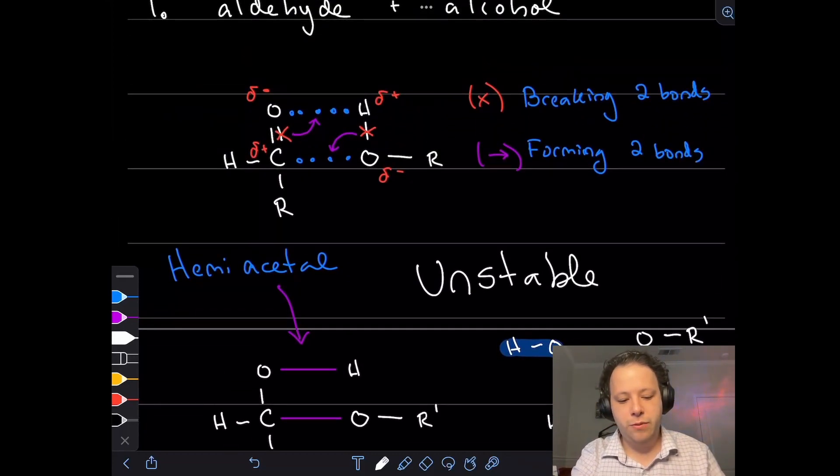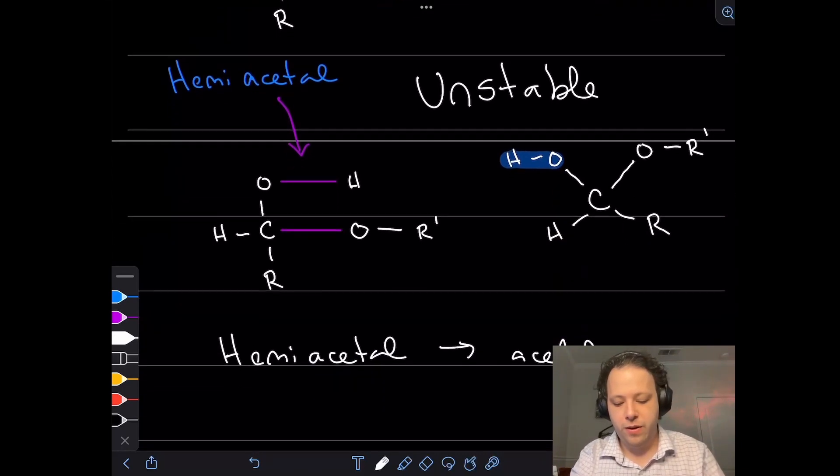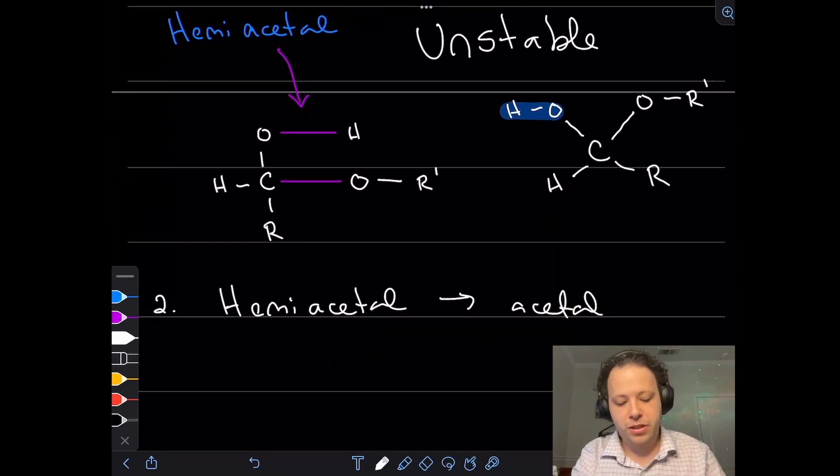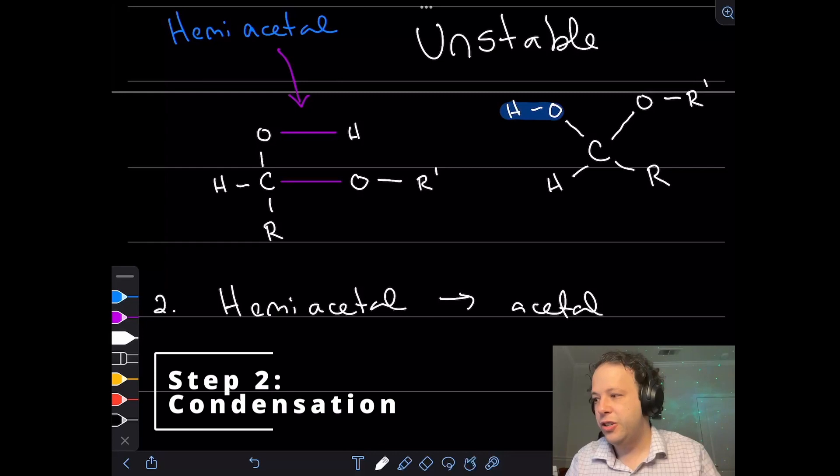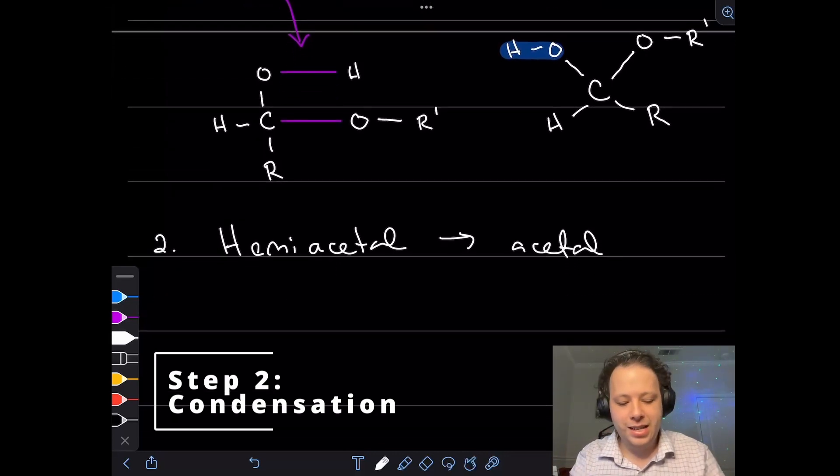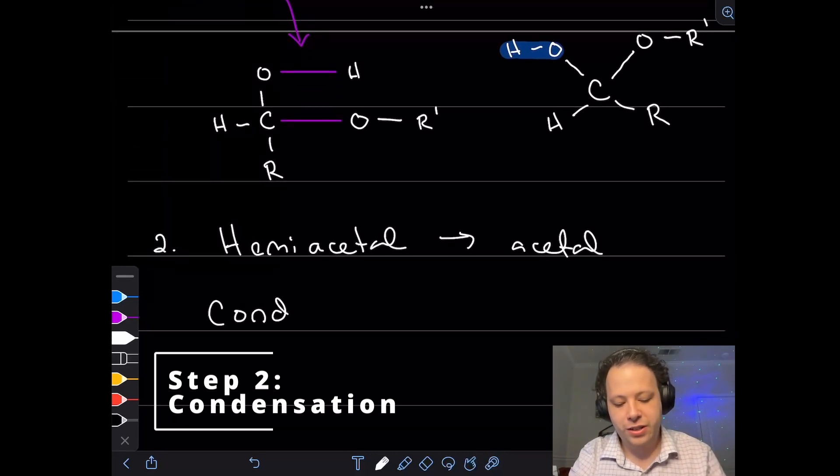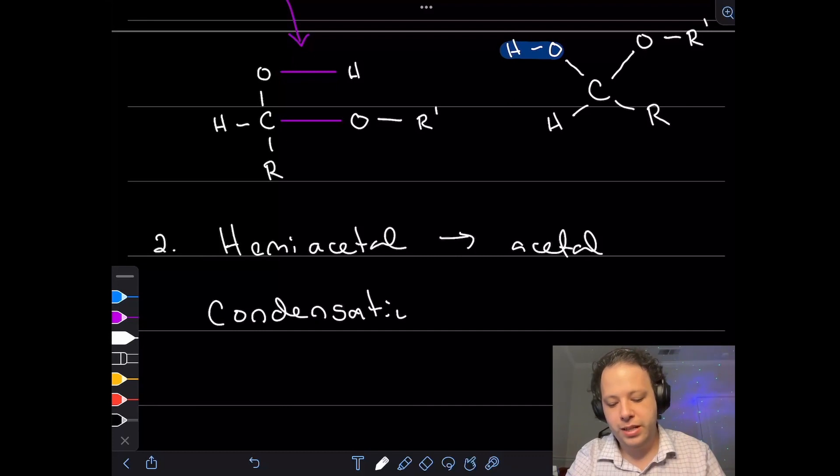If this was step one with our acetal here, now for step two, what we're going to be showing is a condensation reaction. In condensation, the whole idea is that we're going to be removing water. So how do we remove water? Whenever that is removed, that's something that's going to show that a bond is going to be created.